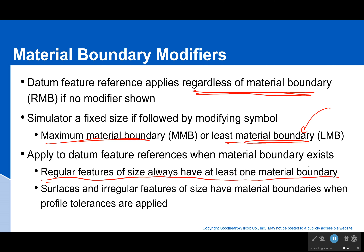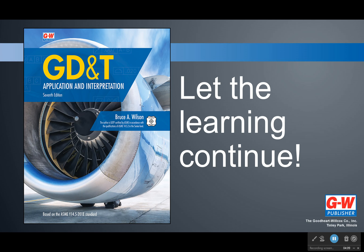Surfaces and regular features of size have material boundaries only when a profile tolerance is applied — we'll come back to that eventually. For now, just realize that you'll usually only see this on features of size: a hole, a cylinder, a slot, two parallel planes, anything like that. So that's enough for this time, just introducing the material boundary modifier concept. Next time we're going to have some more fun with that — thank you for listening, see you later.